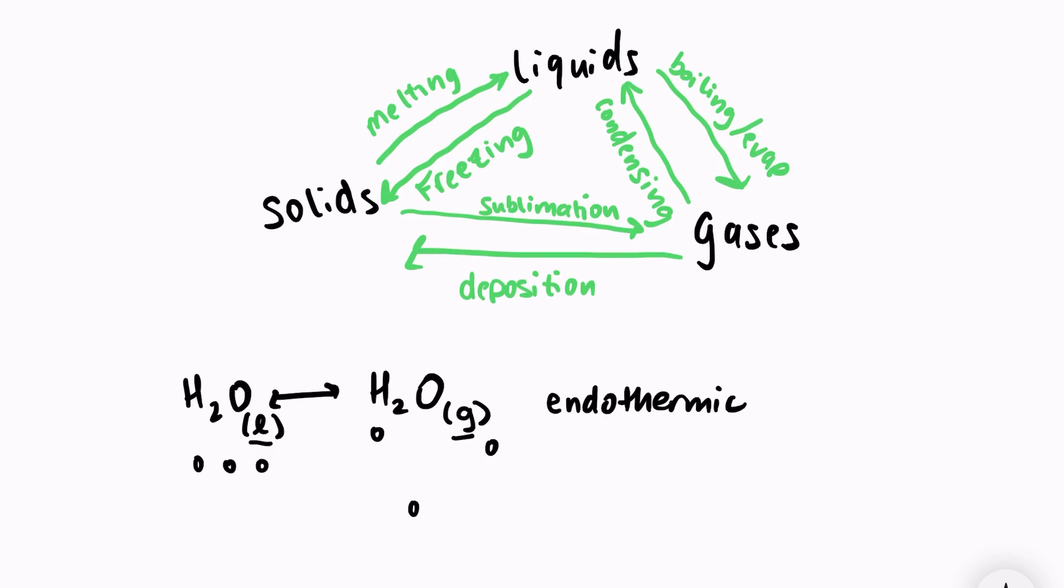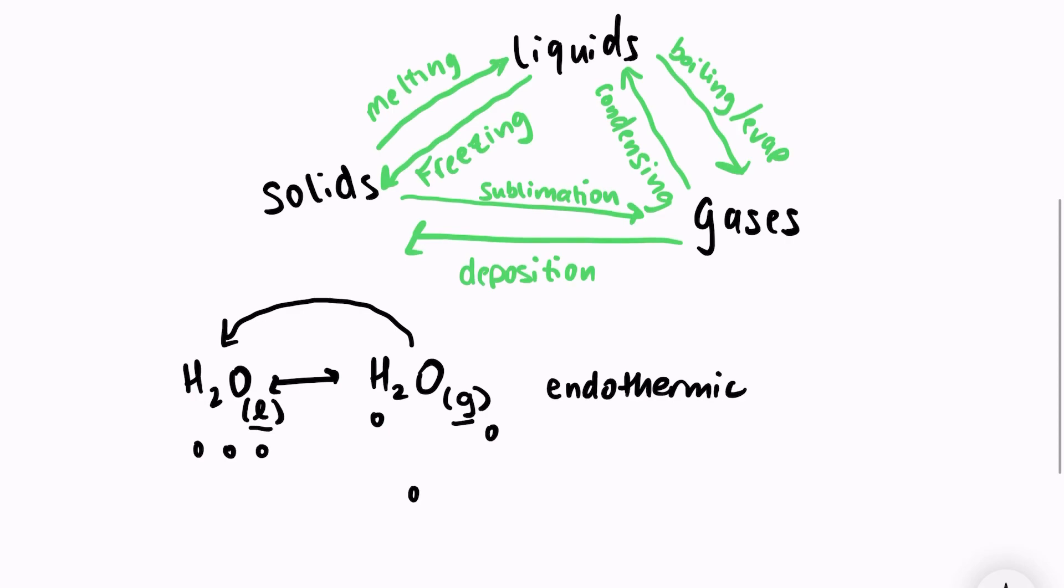Going back the other direction, gaseous water turning back into liquid water, our gas particles went from being very spread out to being closer together, moving slower. So going from gas to a liquid, there had to have been energy given off. So that would be an exothermic change.